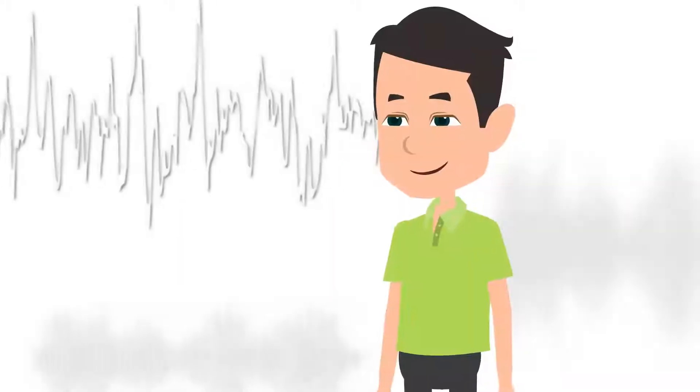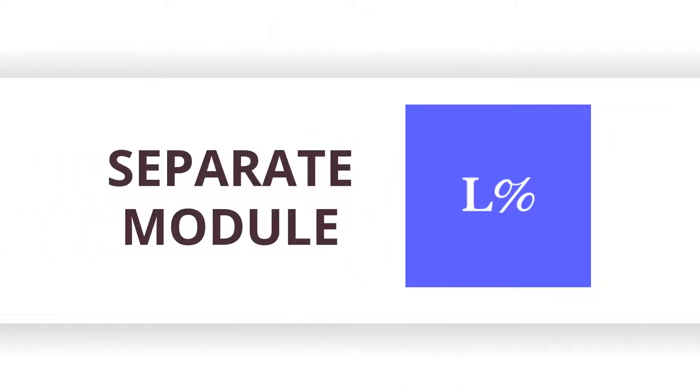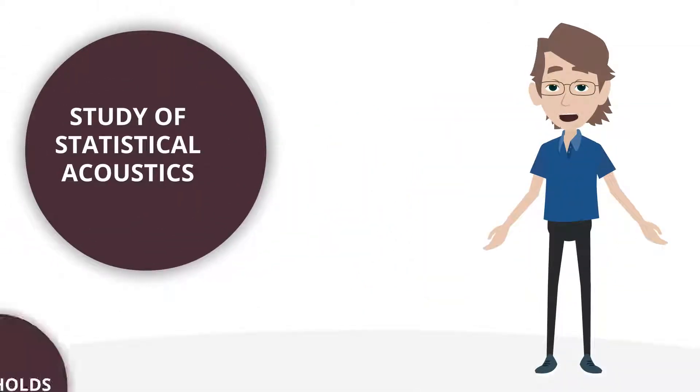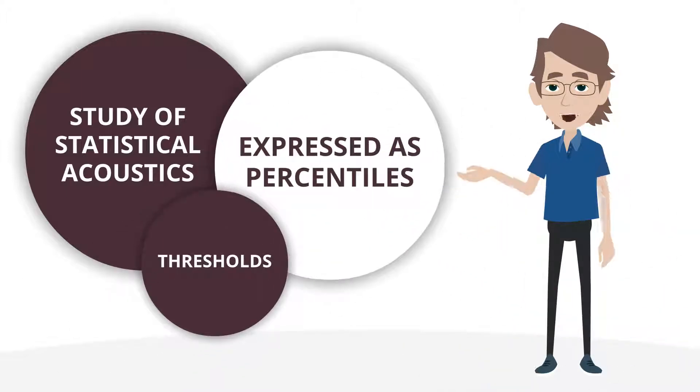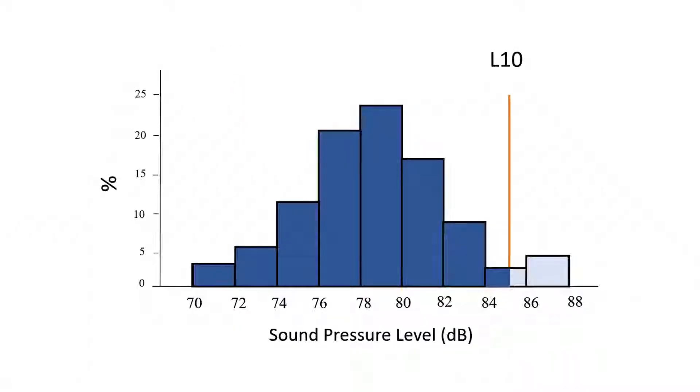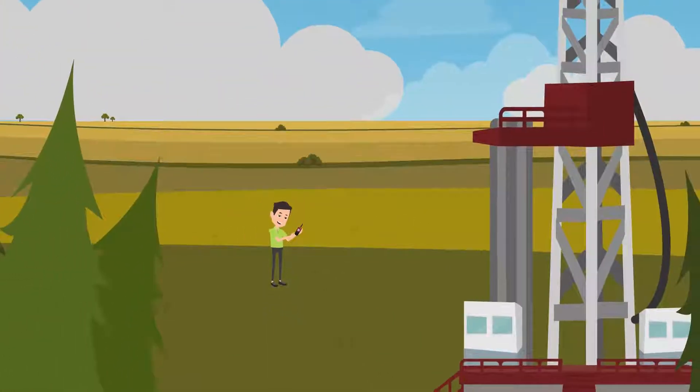To study fluctuating noise levels in more detail, we support statistical acoustics through a separate module. The study of statistical acoustics makes use of thresholds expressed as percentiles. For instance, L95 is the level that is exceeded for 95% of the duration of the measurements. L10 is the level that is exceeded only 10% of the time, so the loudest 10% of the measurement duration. This approach is commonly used when studying environmental acoustics.